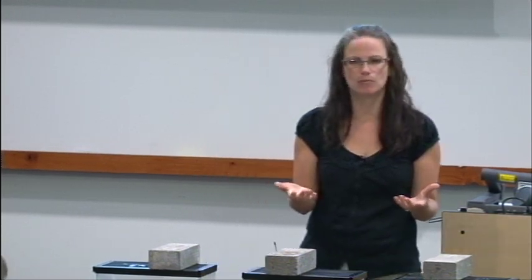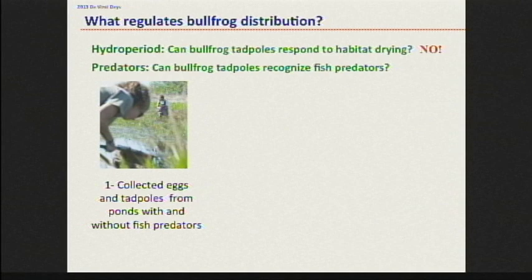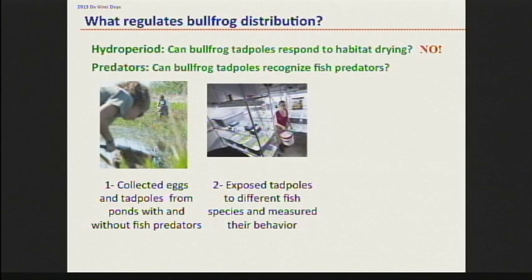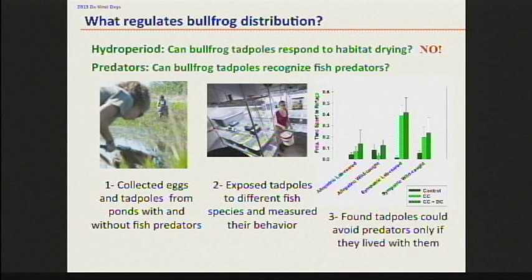The next question was about predators. A lot of people put predatory fish in their ponds to try and beat back the bullfrog populations. We wanted to know: does this work? Can bullfrog tadpoles recognize these fish as predators and act accordingly? A tadpole is not going to get eaten by a fish if it's hiding. So that's what we looked for — can these bullfrog tadpoles hide because they recognized these fish species? We collected eggs from ponds with fish and without fish and exposed the tadpoles to predators in the lab and measured their behavior.